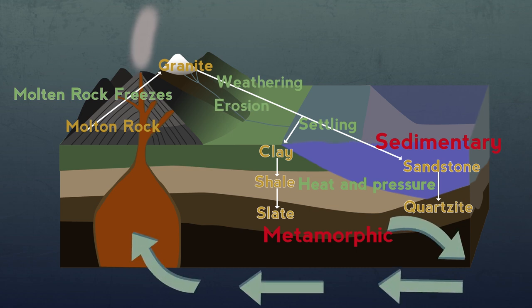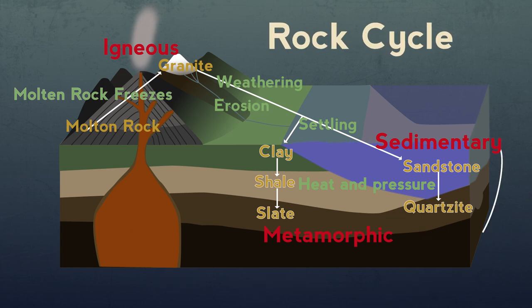Tectonics carry the rocks down into the earth's hot mantle where they melt and emerge once again as igneous rocks completing the rock cycle.